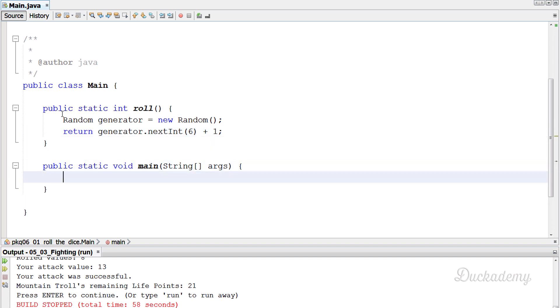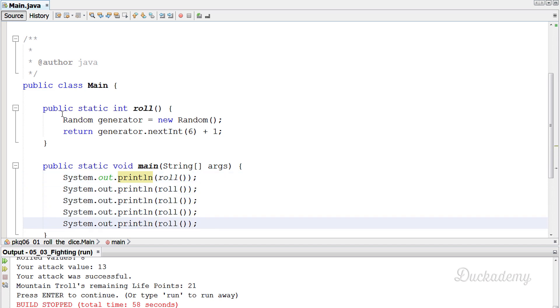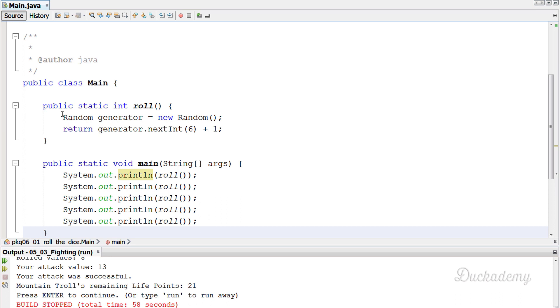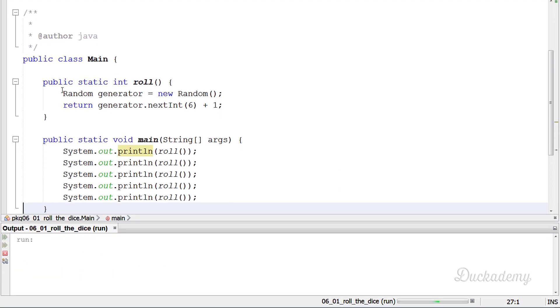Okay. And how to use it? We can print out the return value of the role function and we can do it several times. This is control plus shift plus down. So I created five roles. So let's see the result.